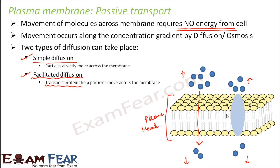You might wonder why some particles can directly cross the membrane while others need transport proteins. This will be fully answered when we discuss the structure of the cell membrane. Not all particles can directly pass through — depending on the nature of the particle, the semi-permeable membrane decides what to allow, which is the key to understanding plasma membrane function.